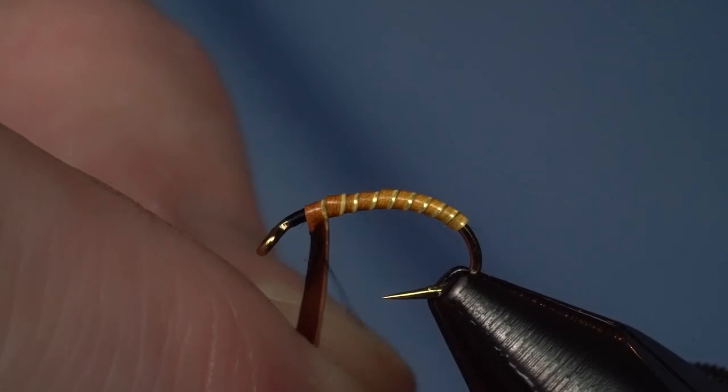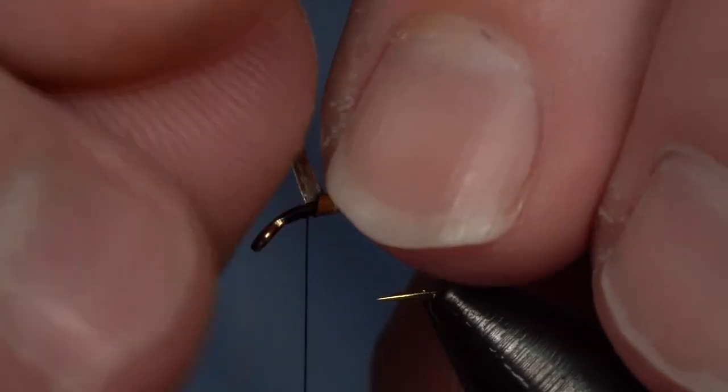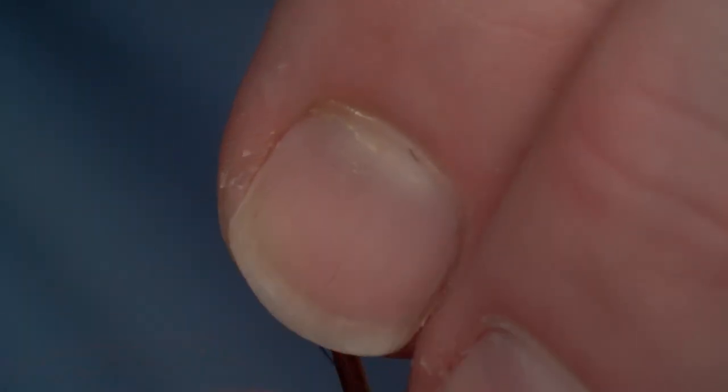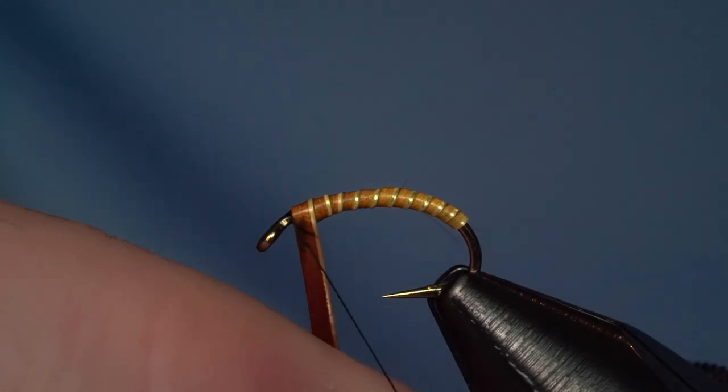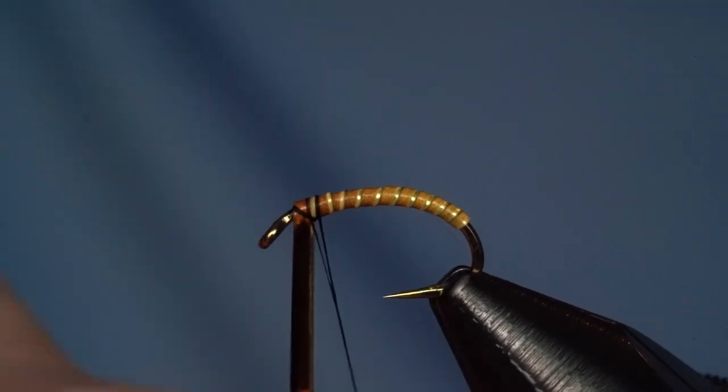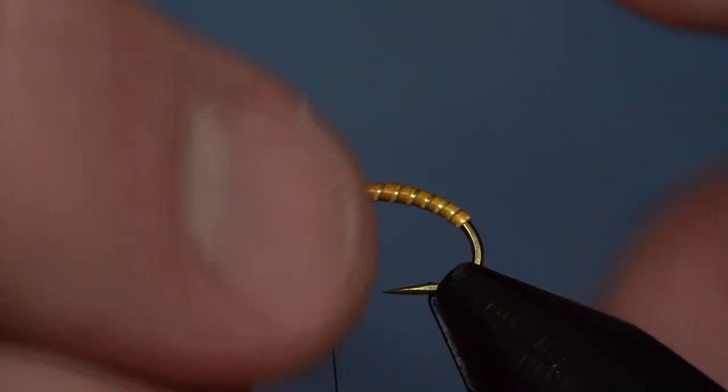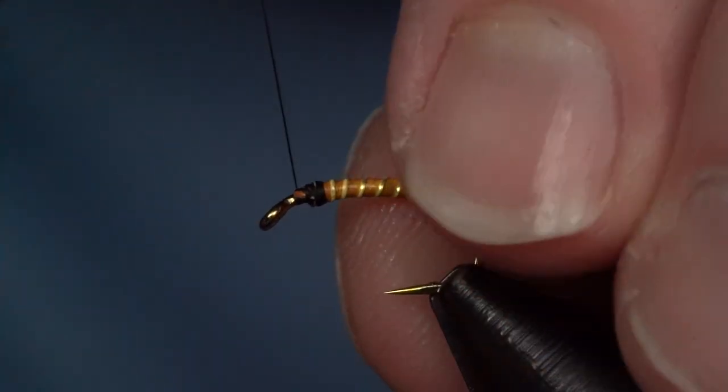Once we get to where our thread was hanging out, we'll wrap it down and capture it with our thread. Give it one more to make a nice smooth transition, then walk back over it slightly.